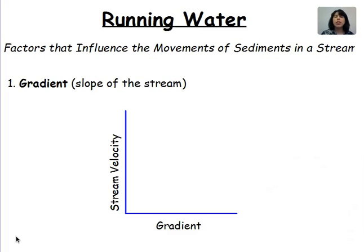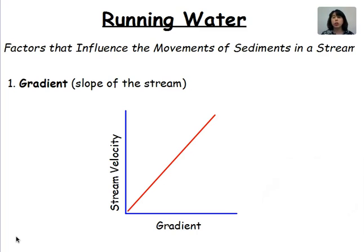There are several factors that will influence the movement of sediments in a stream. One such factor is the gradient or the slope of the stream. Looking at these axes representing the relationship between gradient and stream velocity — as our gradient or slope increases, our stream velocity also increases. The steeper the slope, the faster the water moves. It should also be noted that if you have a steep gradient giving you high velocity, you can carry more sediments in that stream, thereby increasing the amount of erosion that can take place. Steeper gradient means greater velocity means greater erosion.